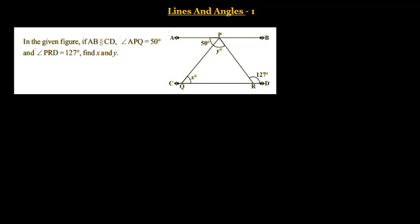In this video, we will solve some problems on Lines and Angles. In the given figure, if AB is parallel to CD, angle APQ is equal to 50 degrees and angle PRD is equal to 127 degrees. Find X and Y.